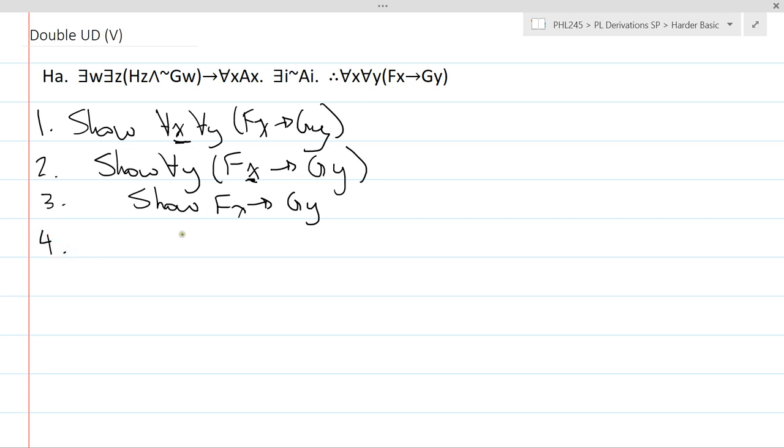Now, I look at my show line and it's just a conditional. So I go fx, that's assume CD. And on line 5, I just need to show gy. And then I get not gy, assume ID.